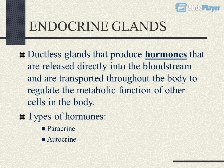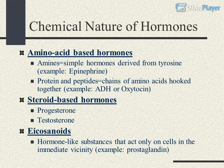Types of Hormones: Paracrine and Autocrine. Chemical Nature of Hormones — Amino Acid-Based Hormones: Amines are simple hormones derived from tyrosine, e.g., epinephrine. Proteins and peptides are chains of amino acids hooked together, e.g., ADH or oxytocin.